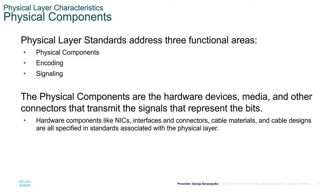What are the physical layer components? Physical layer standards address three functional areas: physical components such as cabling and NICs (network interface cards), encoding and how encoding works in order to transmit that data, and signaling — how we use signaling during the transmission of that data. The physical components are the hardware devices, media, and other connectors that transmit the signal representing the bits. Hardware components such as NICs, cabling materials, cable design, specifications and standards, etc. For now, just remember that for the physical layer, we are looking at the physical components of the network.